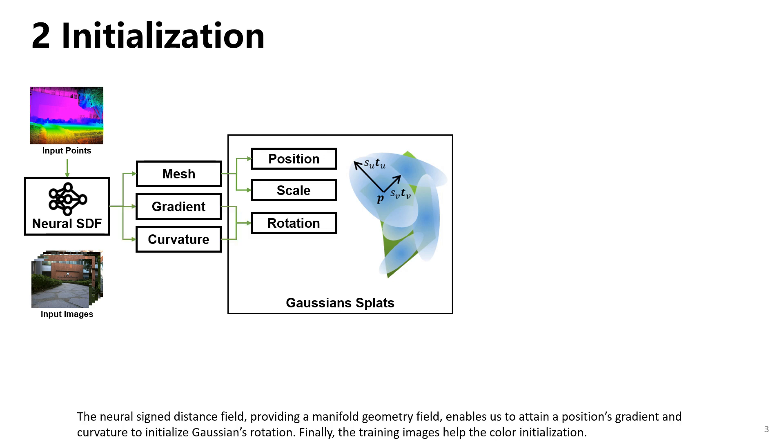The neural signed distance field, providing a manifold geometry field, enables us to obtain a position's gradient and curvature to initialize Gaussian's rotation. Finally, the training images help with color initialization.